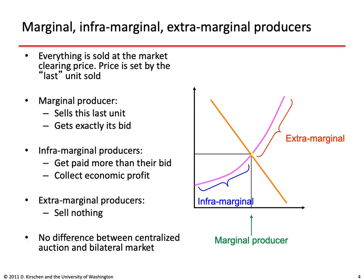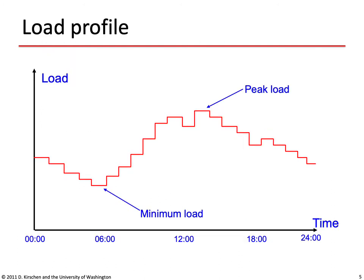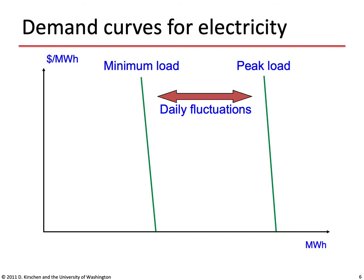There are no significant differences between centralized auctions and bilateral markets — the results end up being the same. Over the course of the day, electrical load varies quite significantly between a minimum and a peak load, leading to a fluctuating demand curve for electricity. The slope of the demand curve does not change dramatically, as it is determined by elasticity, but its position fluctuates horizontally between minimum and maximum load.